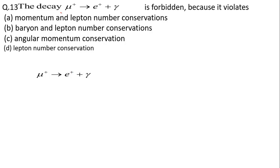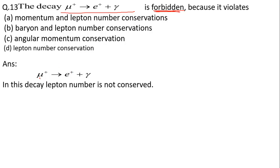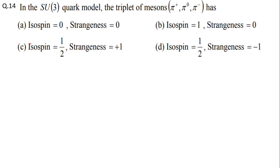Question 13: The decay μ+ → e+ + γ is forbidden because it violates — this means some conservation law is being violated. We need to check muonic lepton number and electronic lepton number. The μ+ has L_μ = −1 on the left, but there is no muon-type particle on the right, so muonic lepton number is not conserved. Electronic lepton number is also not conserved. Therefore, lepton number is not conserved — option D is correct.